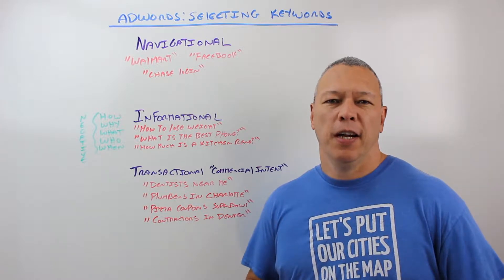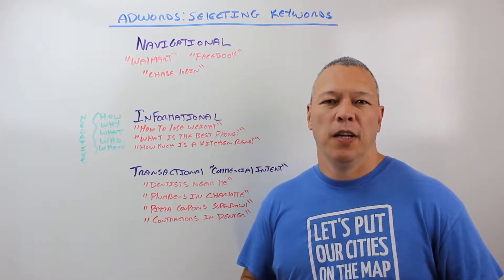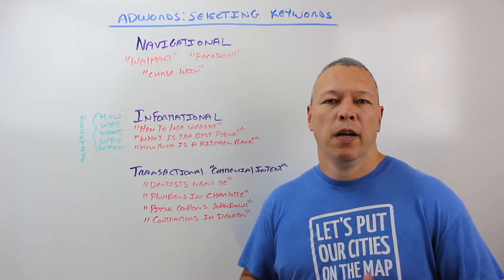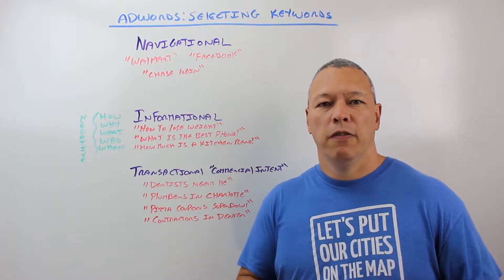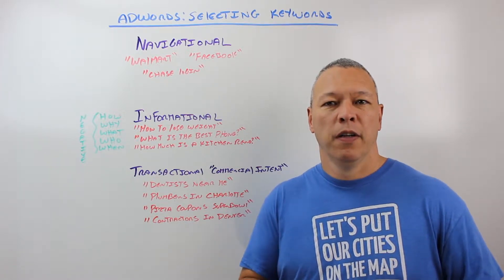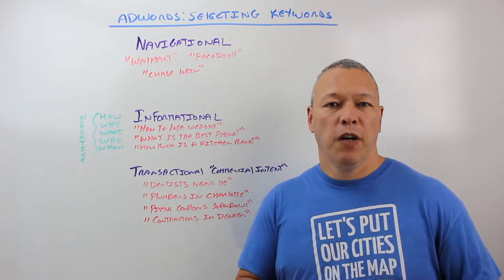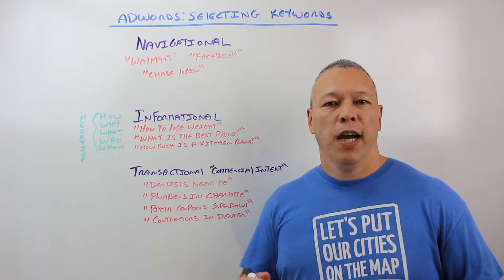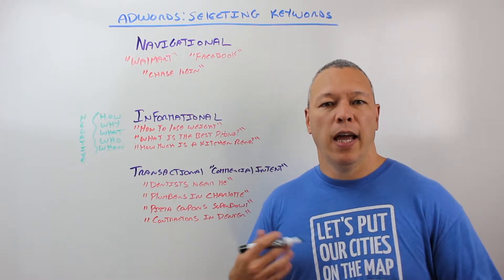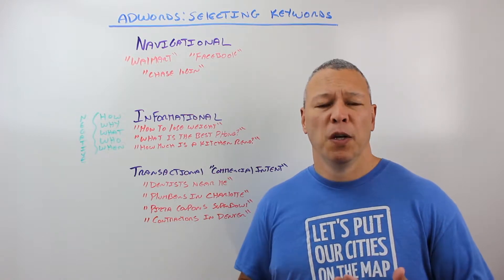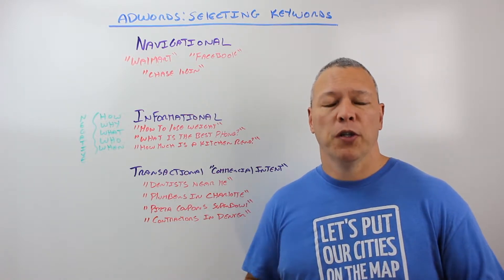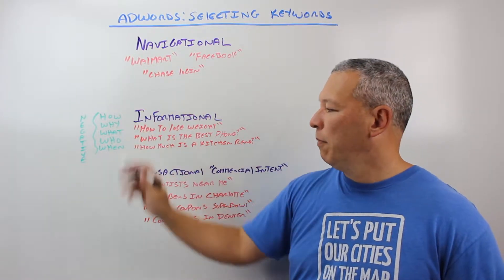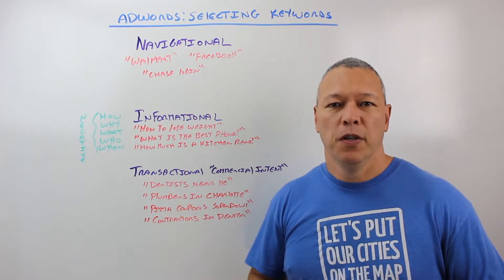Hey, this is Garret from 3Bug Media and today I want to talk about Google AdWords and how to select the right search terms for your Google AdWords campaign. There are a lot of tutorials on how to find the right keywords - search volume, average cost, things like that - but I want to talk about how to select the right types of keywords, the right language your potential customer is going to use. We're going to break it down into three things: navigational searches, informational searches, and transactional searches.